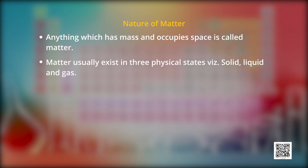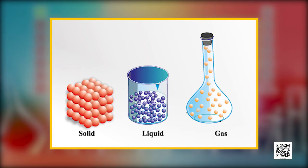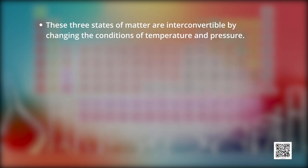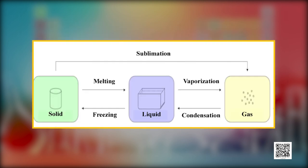Particles are held very close to each other in solids. In liquids, the particles are close to each other, but they can move around. However, in gases, the particles are far apart as compared to those of solids and liquid states. These three states of matter are interconvertible by changing the conditions of temperature and pressure. The solids can be directly converted into gases by the process of sublimation. This you all have studied in class 9. Now, let's have a quick quiz about this.